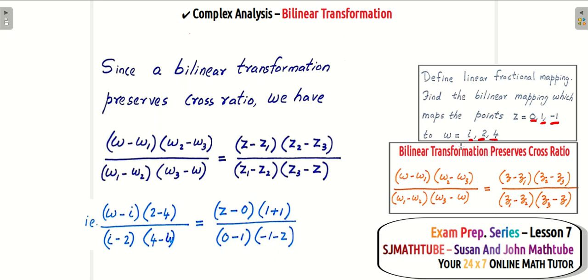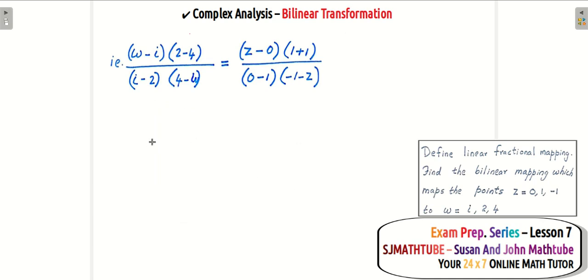Look at 1, 2, 4 — I kept 1, 2, 4 and you will see the same thing over here, and also for Z1, Z2, Z3. Now we have to simplify. Remember, they are asking us to find the function — find the bilinear mapping. Our aim is to find W in terms of AZ plus B, the whole divided by CZ plus D. So we have to find W in terms of Z and it should be in this format. Let's simplify.